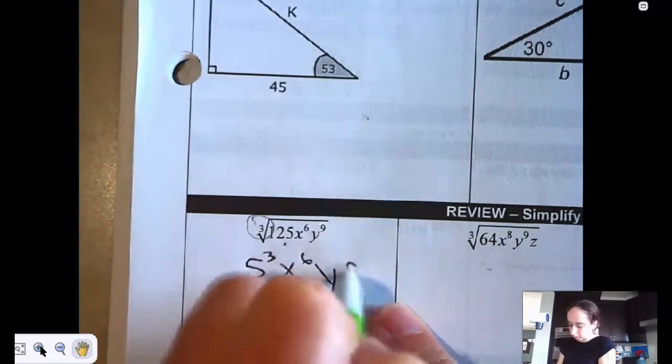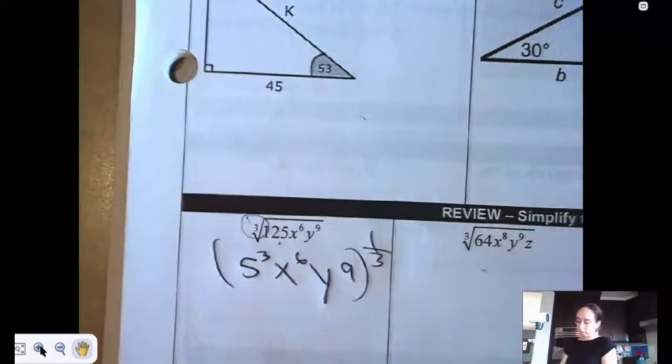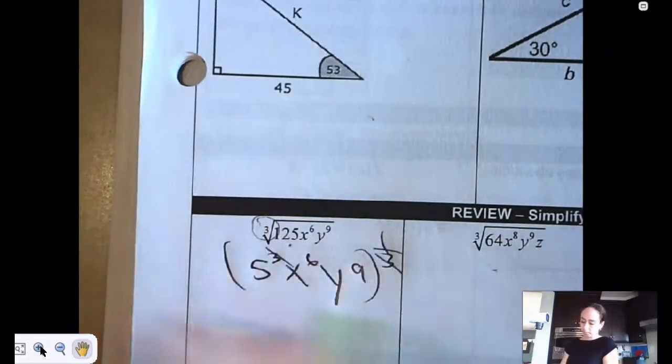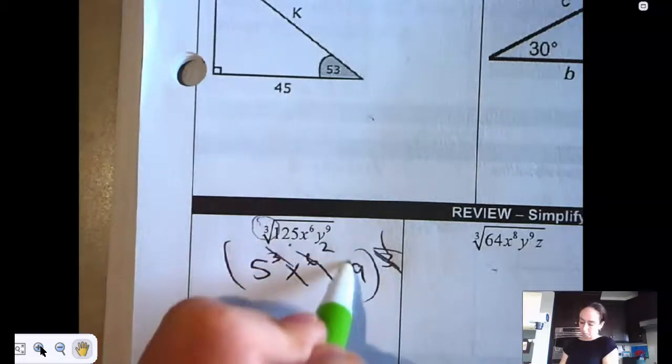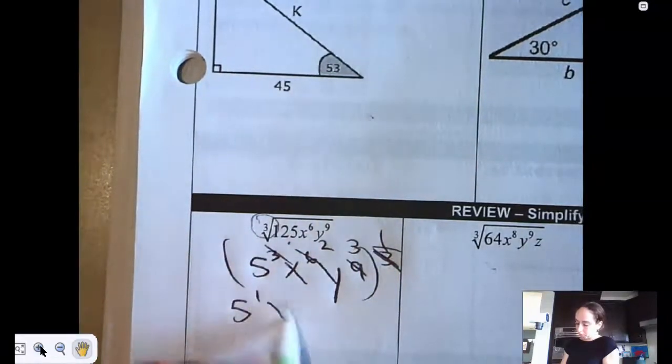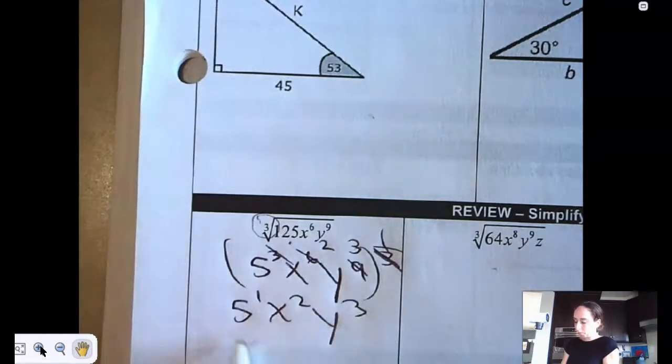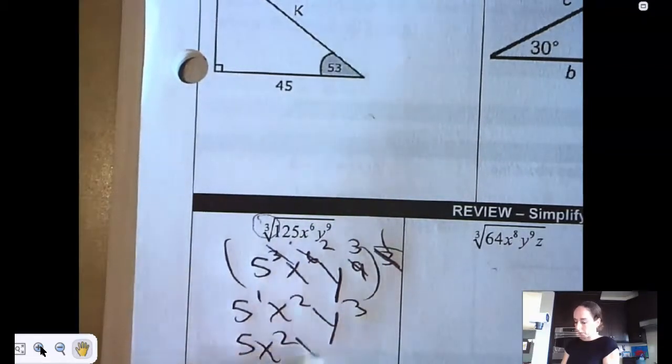Now x to the 6, y to the 9th, all to the 1/3rd. So that would be 5 to the 1st, x squared, y cubed, which is 5x squared y cubed.